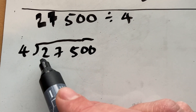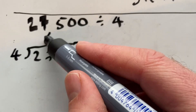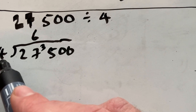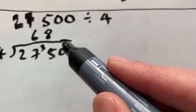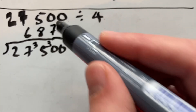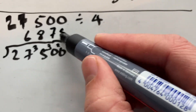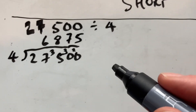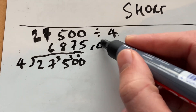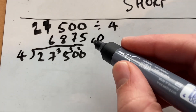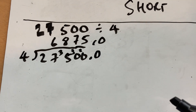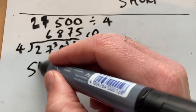4 doesn't go into 2. 4 does go into 27 six times — 6 times 4 is 24, leaving a remainder of 3. 4 does go into 35 eight times, leaving a remainder of 3. 4 goes into 30 seven times, leaving a remainder of 2. 4 goes into 20 five times. If we're in primary school we record the remainders; if we're in secondary school we continue into decimal places by putting the decimal point there. So that's short division for 27,500 ÷ 4.